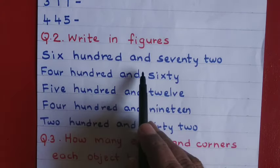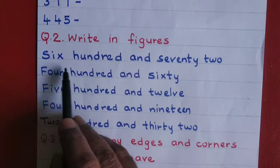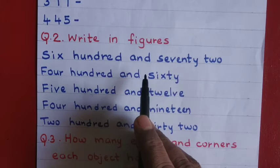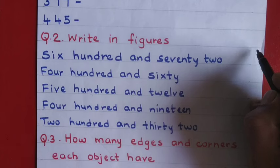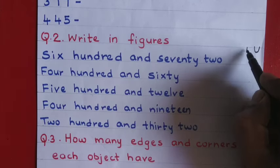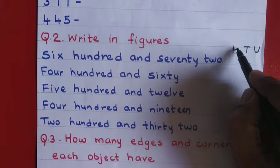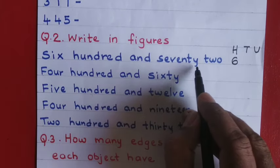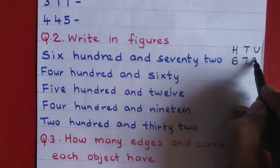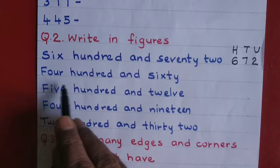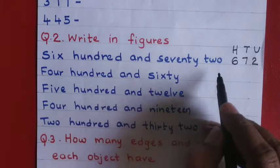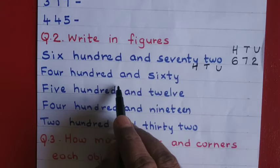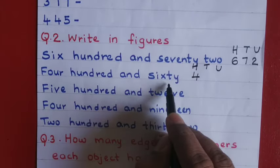Six hundred and seventy two. Here the number has been given in words and you have to write the number. Six hundred means you have three places — hundreds, tens, and units. Six hundred and seventy two. Similarly, four hundred and sixty: again you have three places — hundreds, tens, and units. Four hundred and sixty.